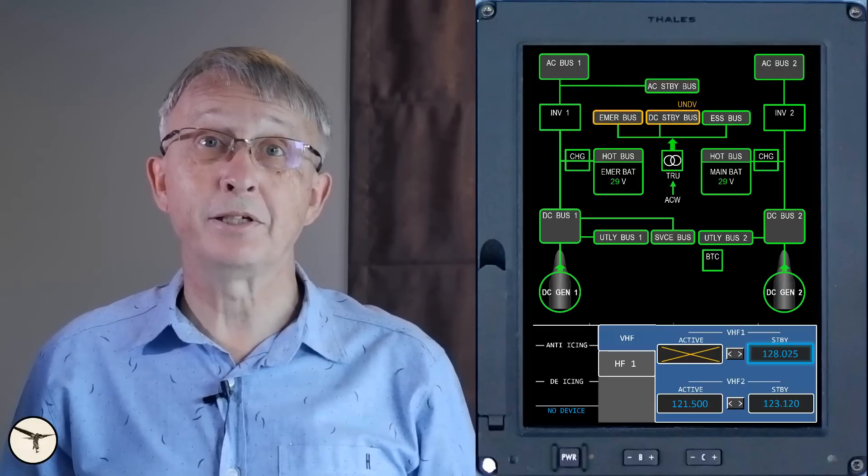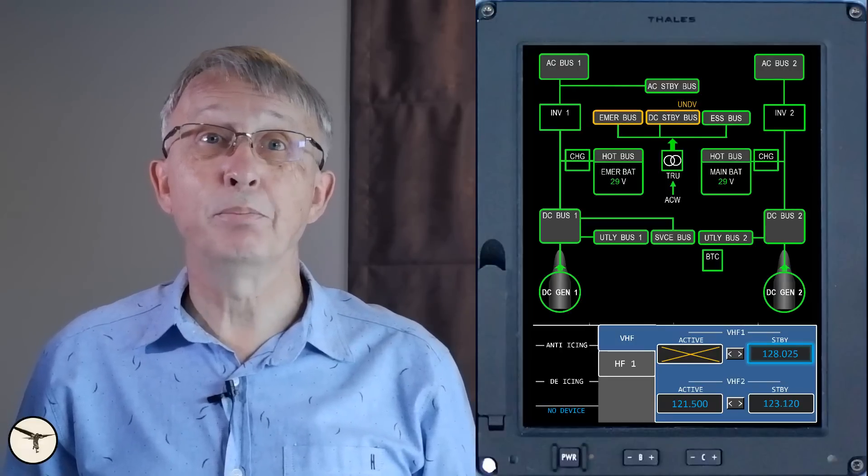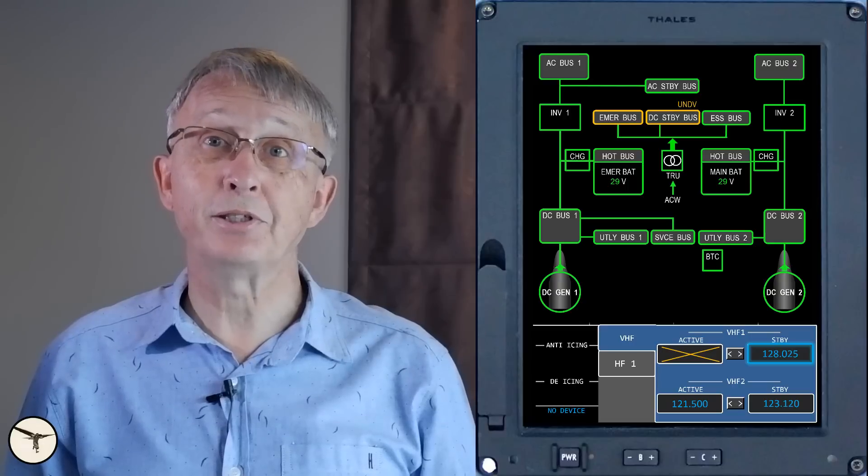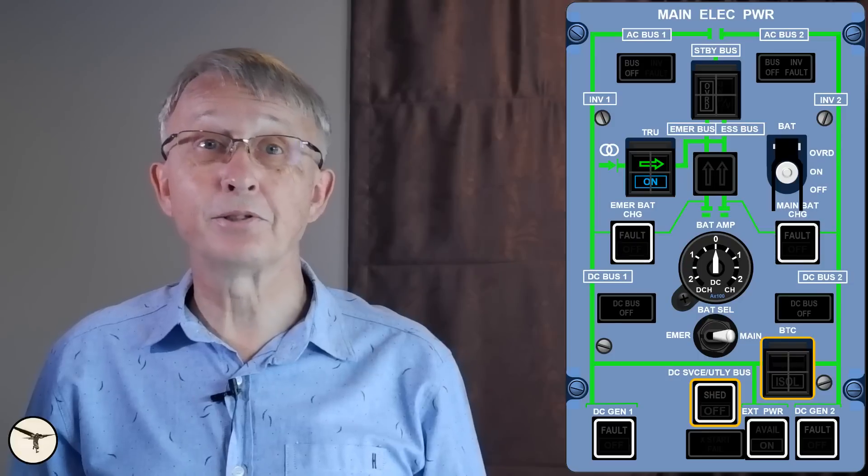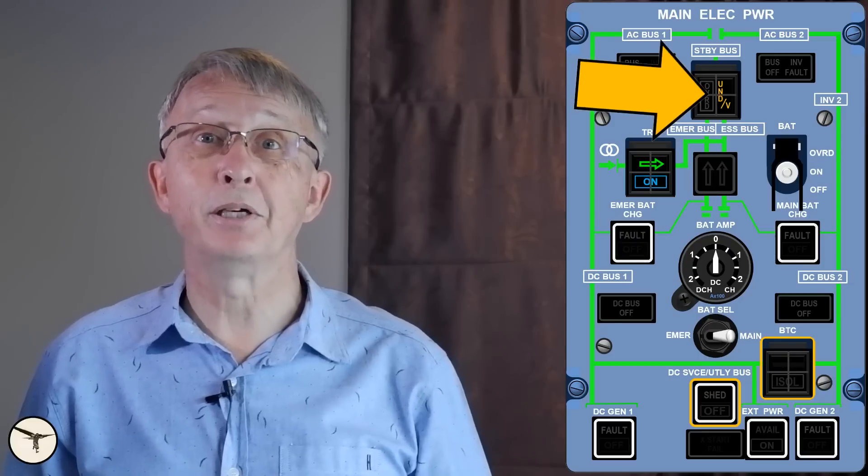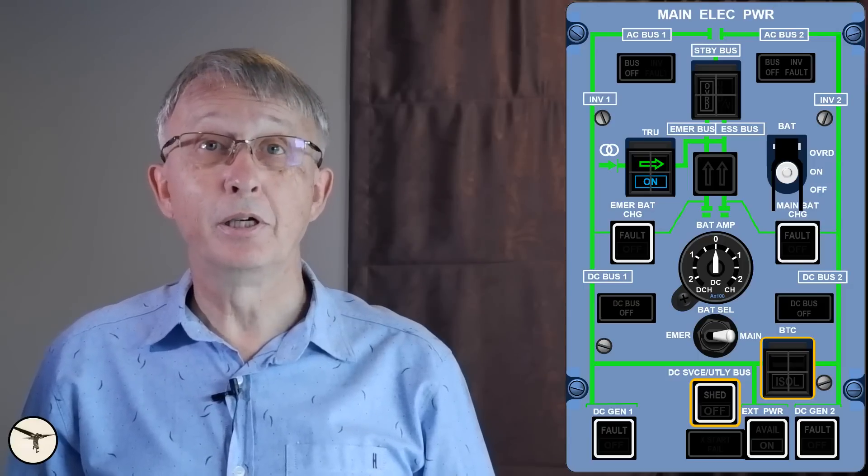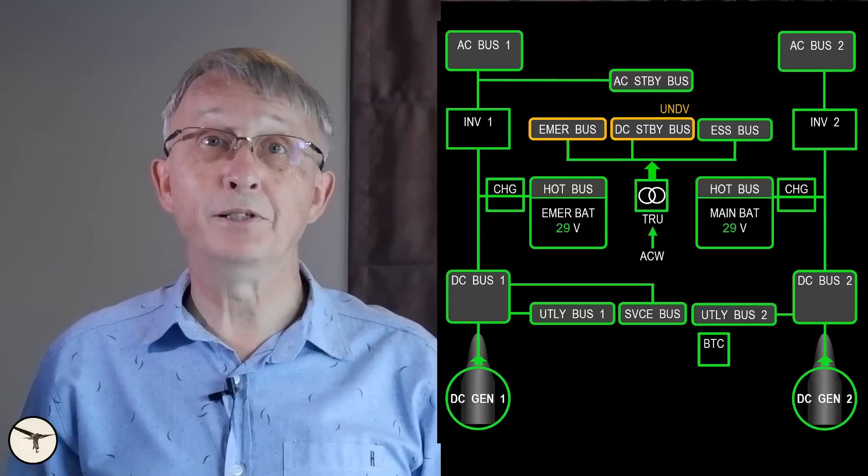Both pilots recall some electrical bus bars turning amber on the electrical system page. They reported the alert messages included DC standby bus under-voltage. However, the captain did not see the under-voltage light on the standby bus push button, because that light is powered by the DC emergency bus, which had been lost together with the DC standby bus.